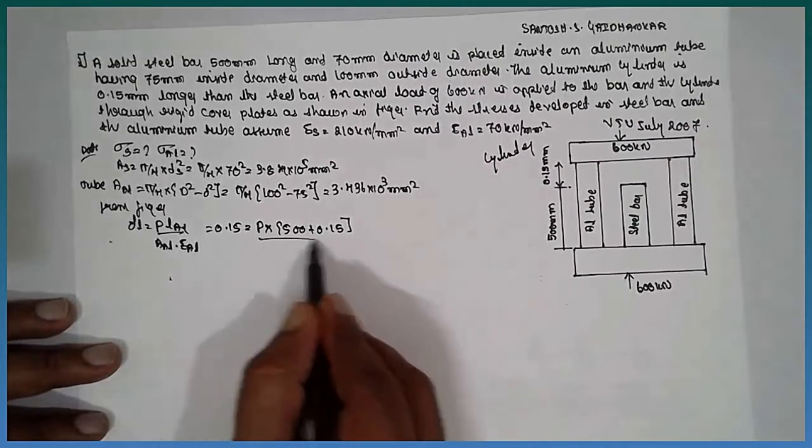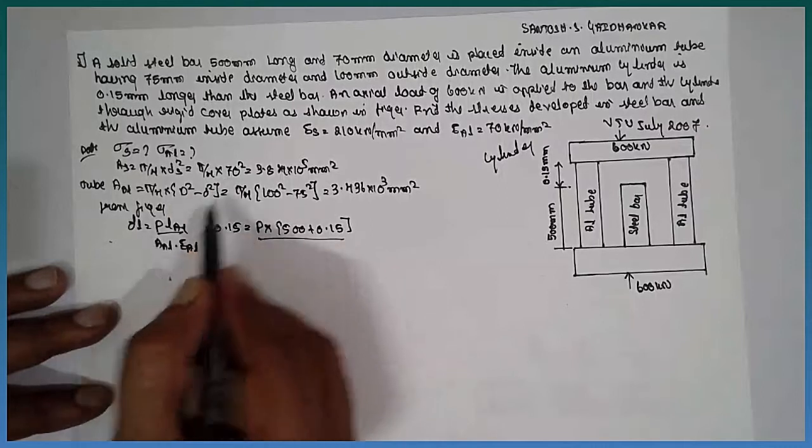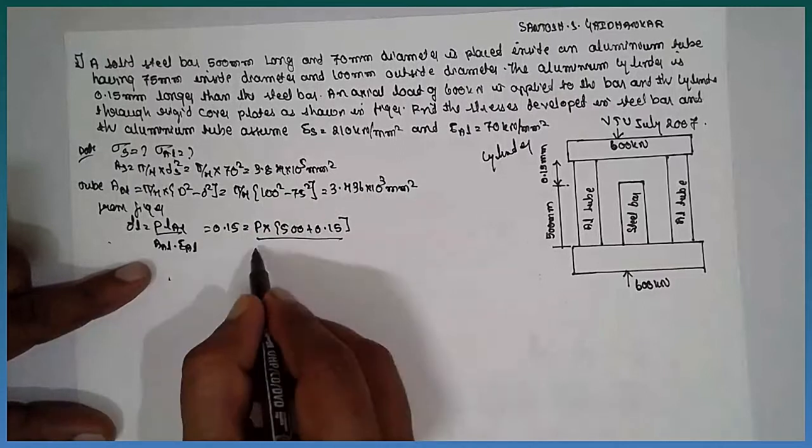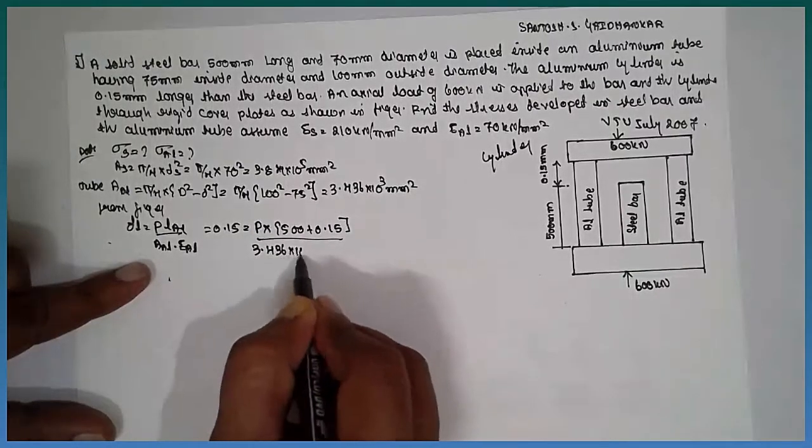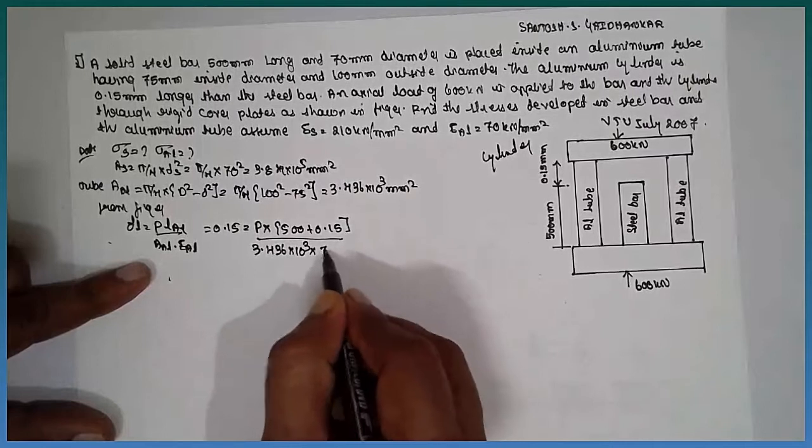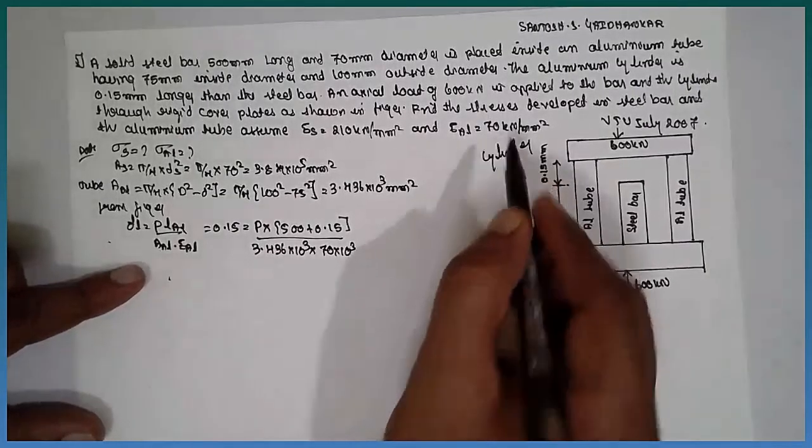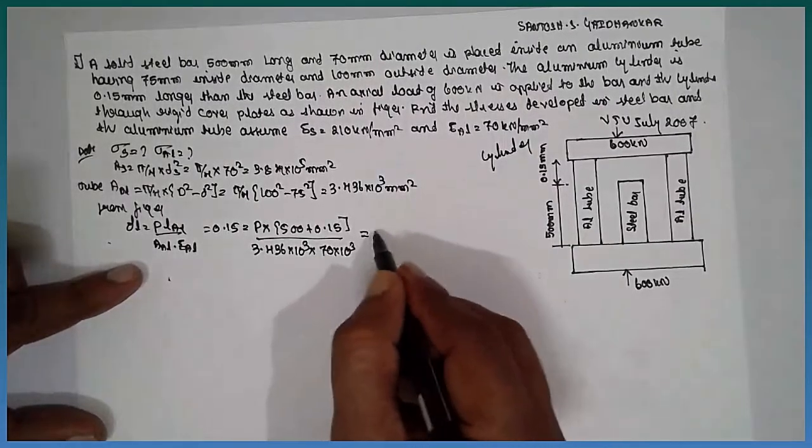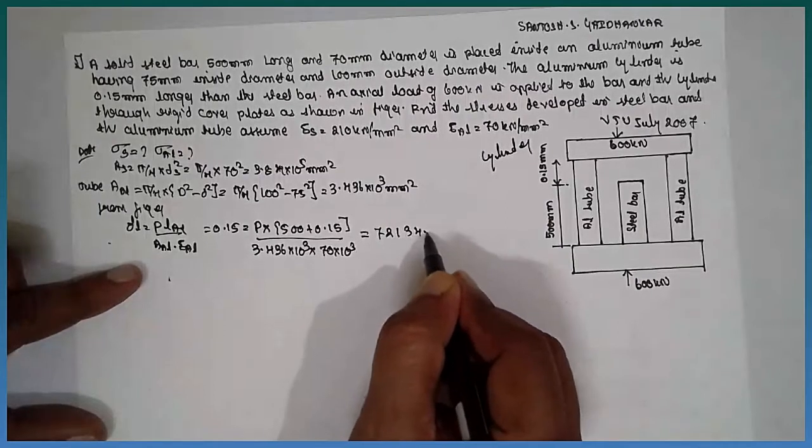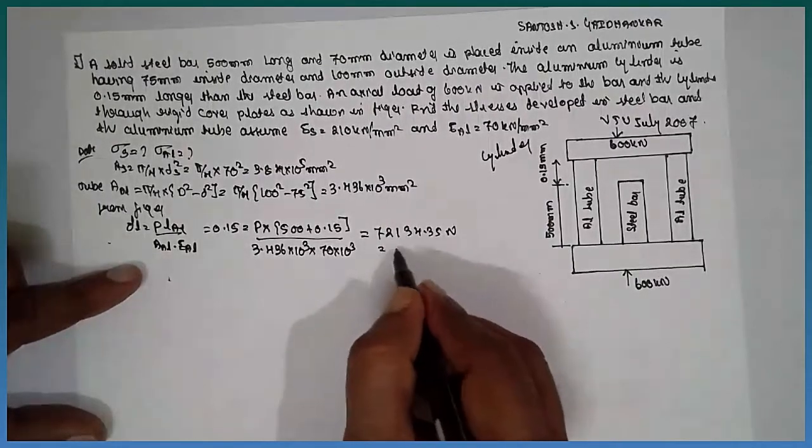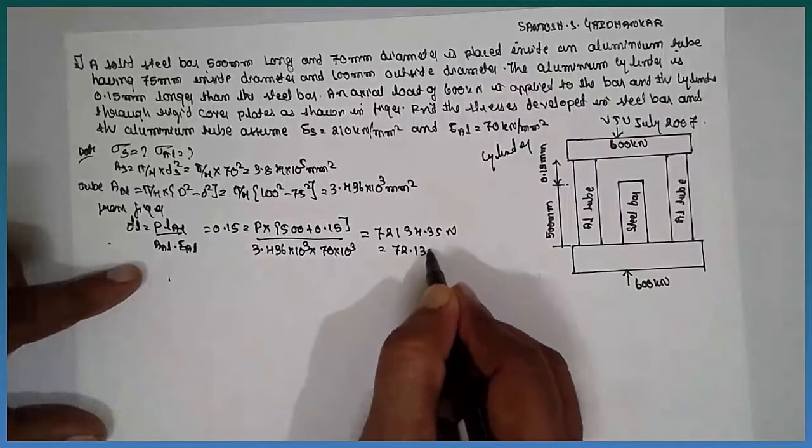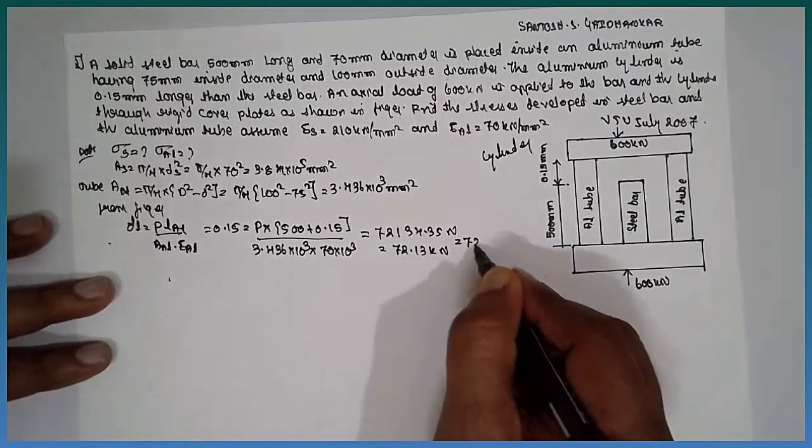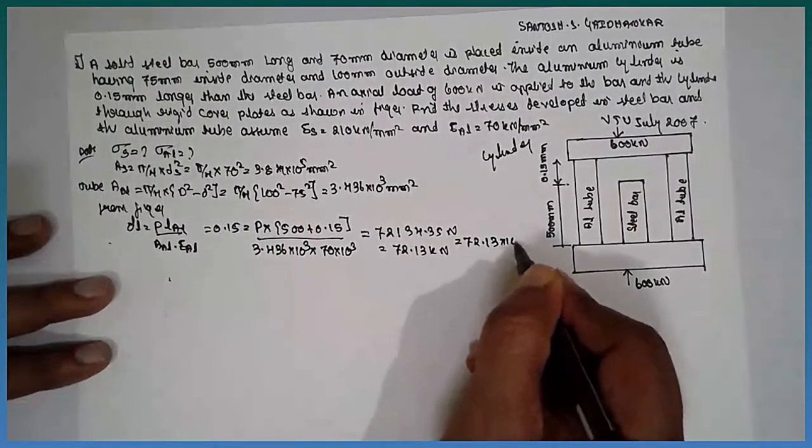The length divided by aluminum AL, 3.436 into 10 raised to 3. Because it is a kilonewton, therefore you have to write 3. If you calculate, the P value will be 72,134.35 Newton or 72.13 kilonewton.